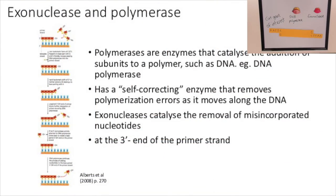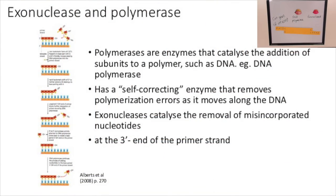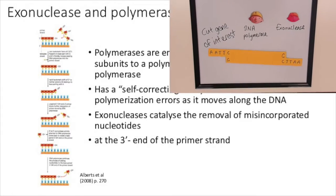Polymerases are enzymes that catalyse the addition of subunits to a polymer such as DNA. DNA polymerase has a self-correcting function that removes errors as it moves along the DNA during replication. Exonucleases catalyse the removal of misincorporated nucleotides at the 3' end of the primary strand.